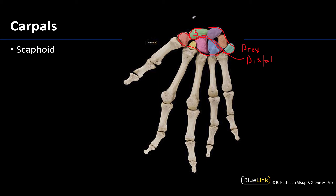The scaphoid is the most clinically relevant of the carpal bones because it's most commonly fractured, and we talked about how avascular necrosis can occur. That is the lateral most bone in the proximal row. Going through the others from lateral to medial: this is the lunate, this is the triquetrum, and this is the pisiform. The pisiform is that sesamoid bone sitting right on top of the triquetrum and will form within that flexor carpi ulnaris tendon.